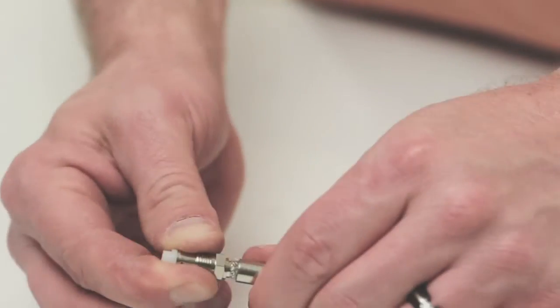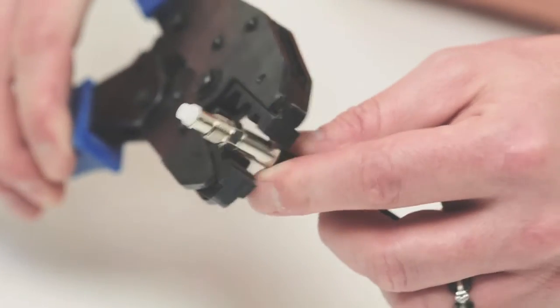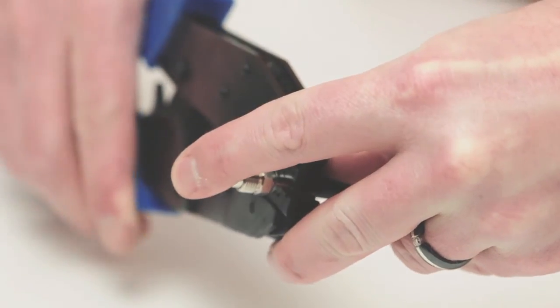Then slide up the ferrule and you're ready to crimp. With adequate pressure, crimp the ferrule onto the jacket. This pinches the ferrule and keeps the connector in place.